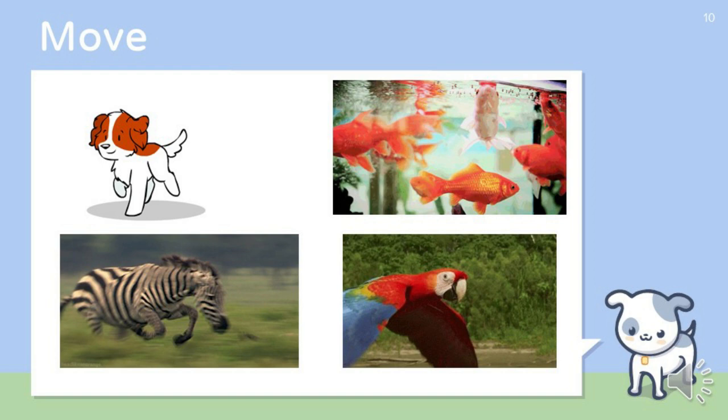Animals also move. Some animals show their movement by running. Fish show their movement by swimming in the water. Birds move by flying in the air.